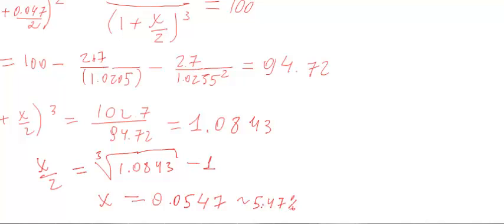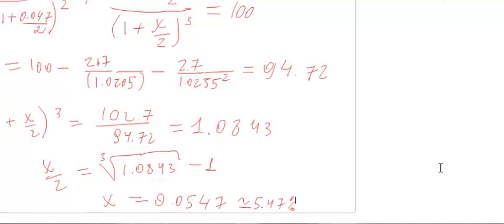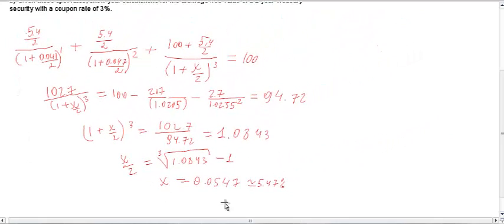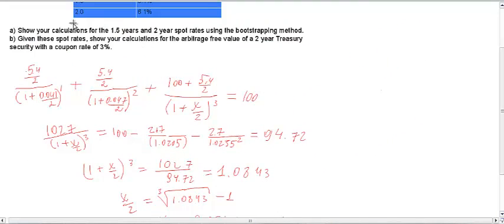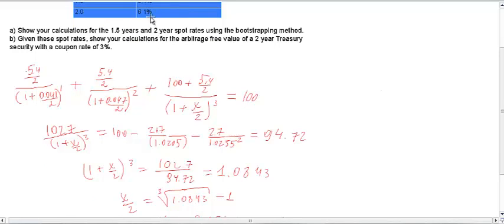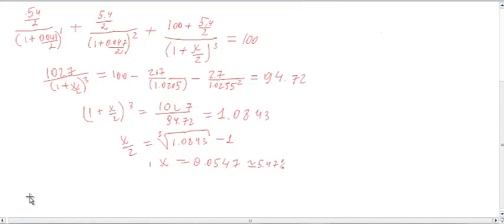Now we need to find the two-year spot rate, and we'll use the 1.5-year spot rate of 5.47% we just calculated in this next step. For the 2-year bond the coupon is 6.1%, so the semi-annual cash flow is not 2.7 but rather 6.1/2 = 3.05.